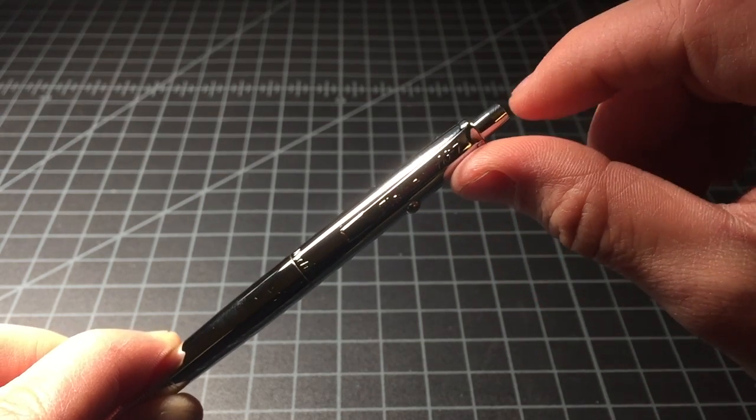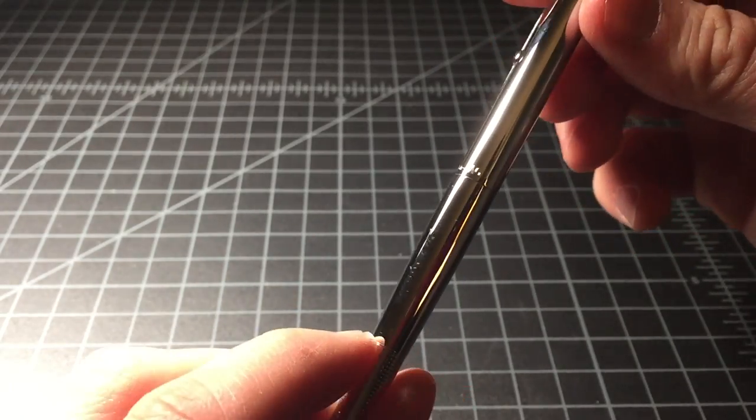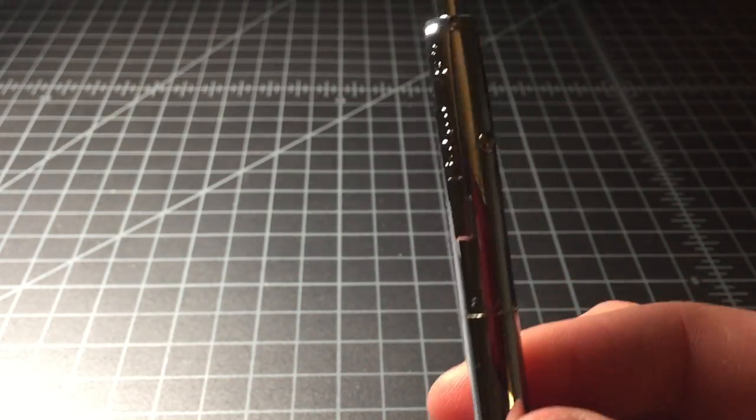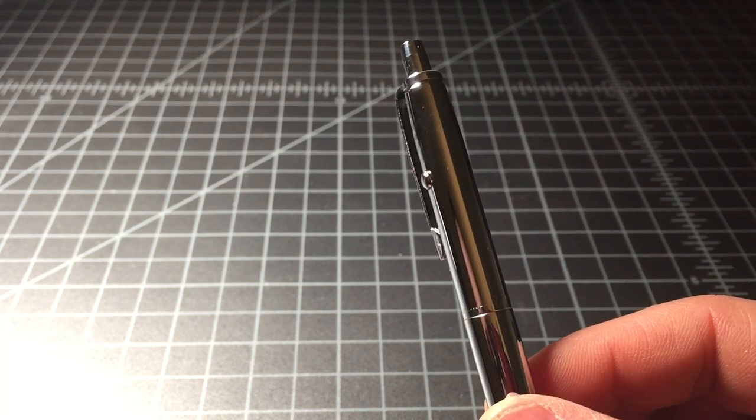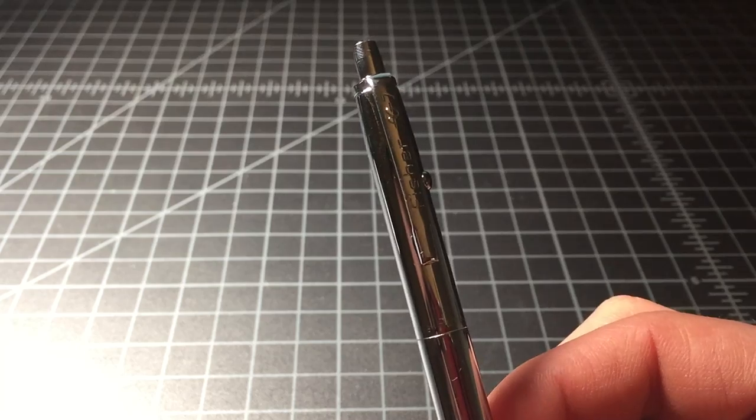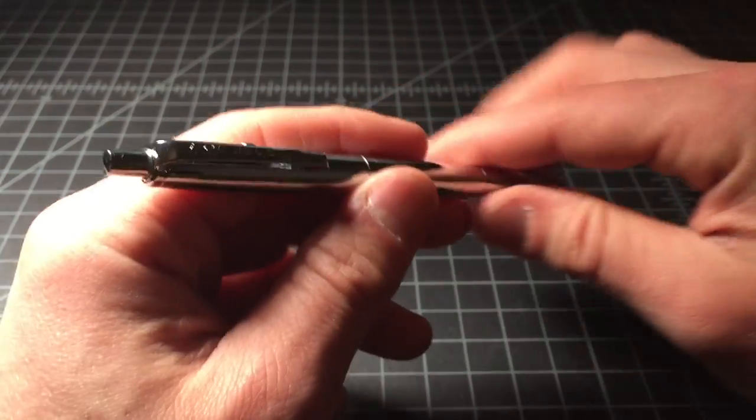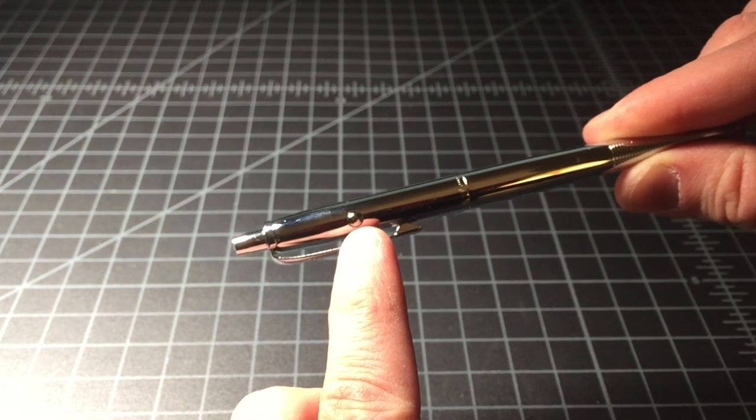And the AG7 is in a really kind of space-age italicized font, which is pretty cool. Along the body it just says Fisher USA AG7 Space Pen. Great, so no surprise there.